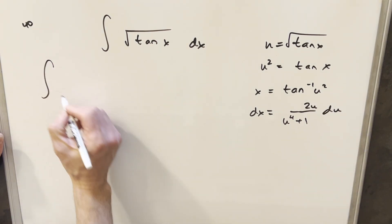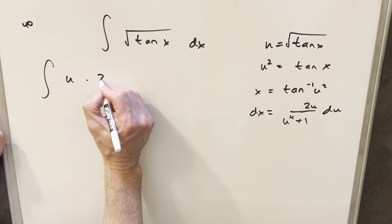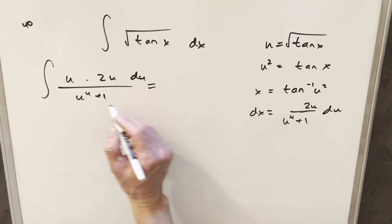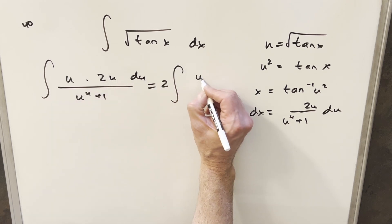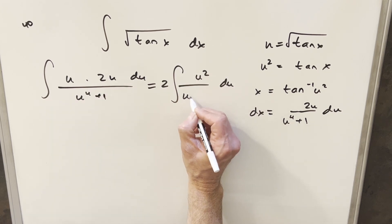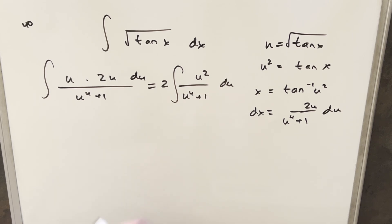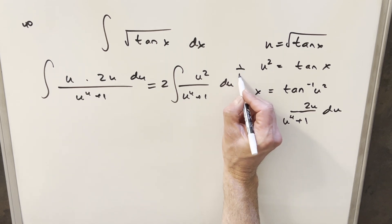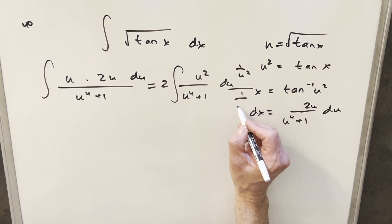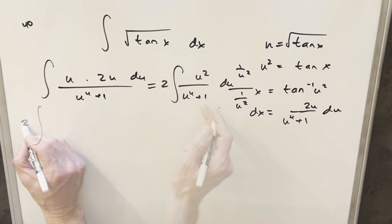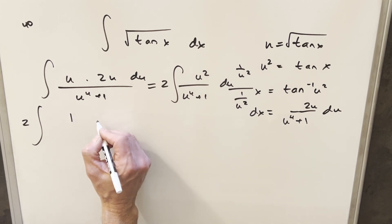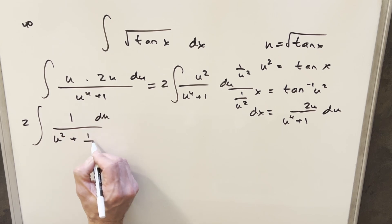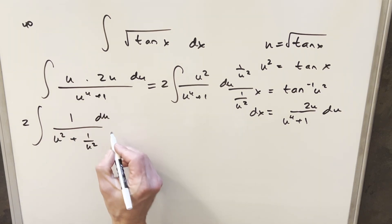So we'll go ahead and make this substitution. This thing is just going to be u, times 2u du over u to the 4th plus 1. I'll clean it up a little bit — pull the 2 out front of the integral, u times u gives me u squared, and then here we have du over u to the 4th plus 1. Now what I like to do when I have a 4th power is multiply by 1, specifically 1 over u squared over 1 over u squared. Multiplying 1 over u squared times u squared gives me 1 in the numerator, and in the denominator we end up with u squared plus 1 over u squared.